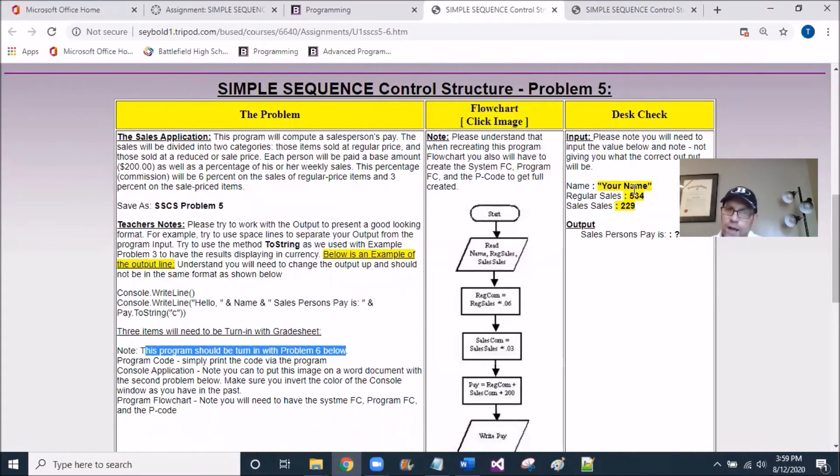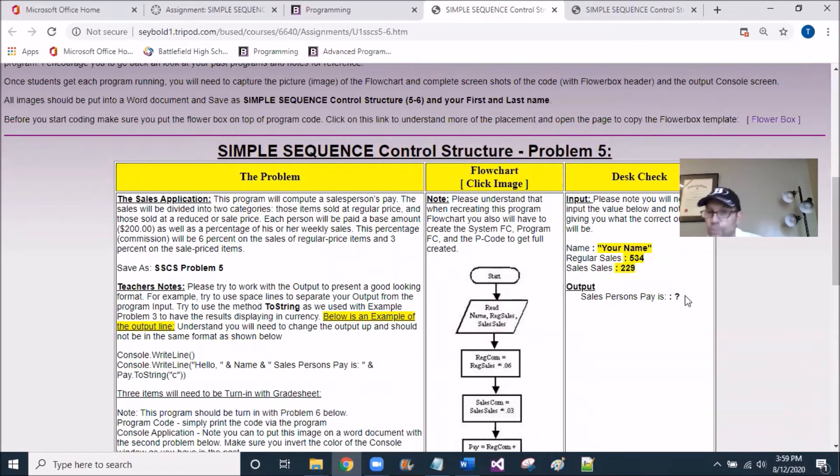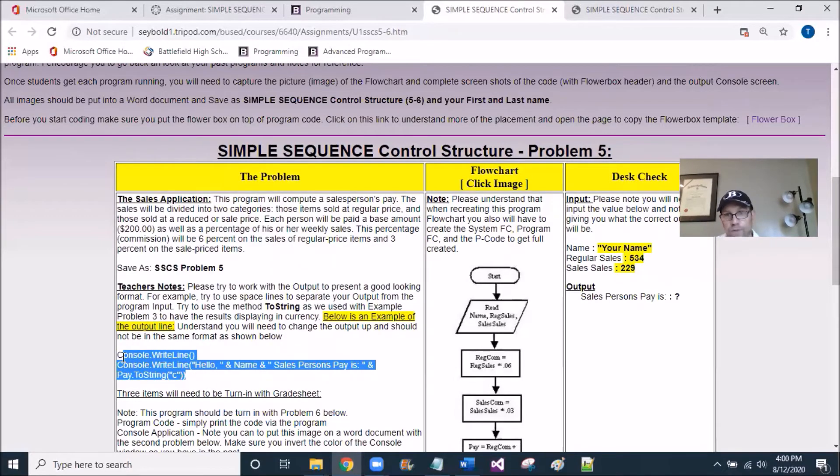And then finally, the desk check, during runtime, you're going to have to enter in some inputs. You're going to have a name input, you're going to have a regular sales, and you're going to have the sales sales. And so, your output. I'm not giving you the output number, but the output, as you see here, is a question mark. That line item is output. So understand I've kind of dissected that output over here a little bit. And so you can see the salesperson's pay does show up here. And then look at the pay.toString, and you see the C for currency. So I reviewed this with your last program as an example of output.